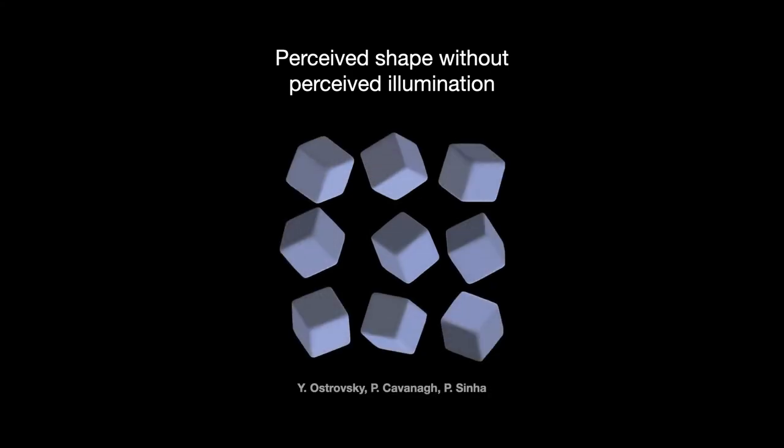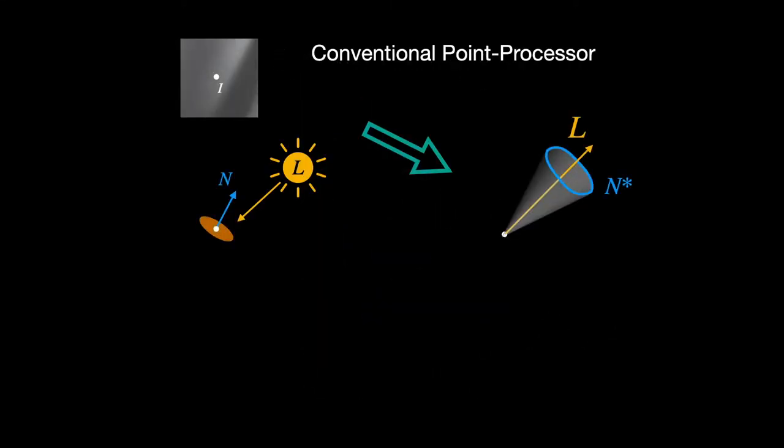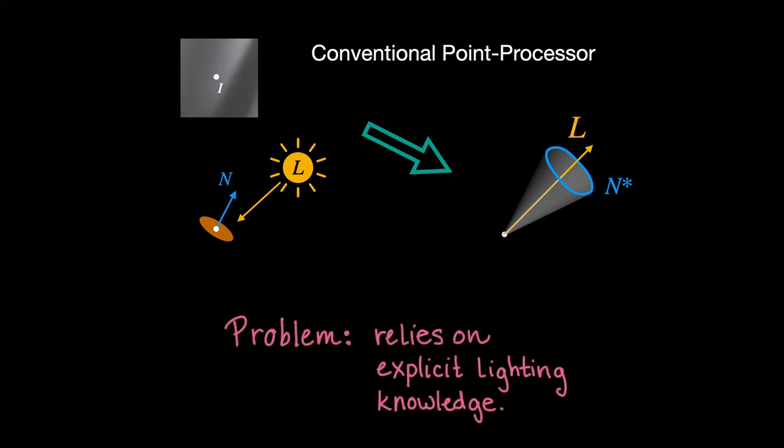Here's a simple demonstration. The 3D shapes are immediately perceptible. They're all cubes. But when I tell you that one of the objects is lit from a different direction, you might be surprised. And it probably takes some effort to figure out which one it is. This simple perceptual example highlights a fundamental shortcoming of the traditional point processor. It requires prior knowledge of lighting.